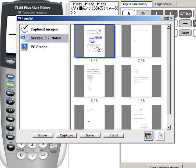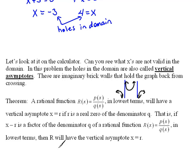Okay, let's talk about what the definition of a vertical asymptote is. We have this theorem that says a rational function in lowest terms will have a vertical asymptote, some r number, some number, if that is a real zero of the denominator. That is, if x minus r is a factor of the denominator, q, of a rational function. In lowest terms, then r will have the vertical asymptote x equals small r.